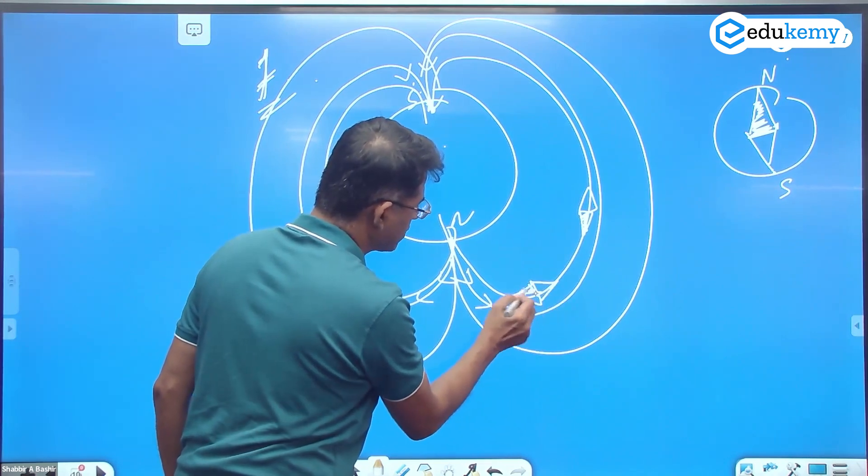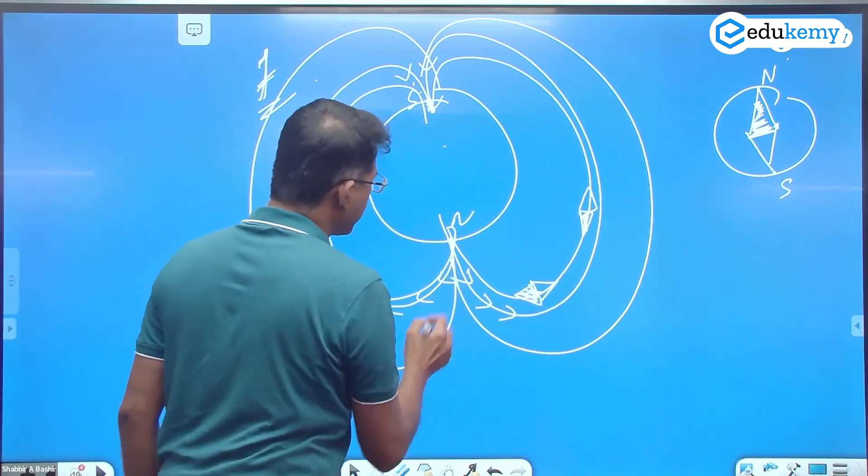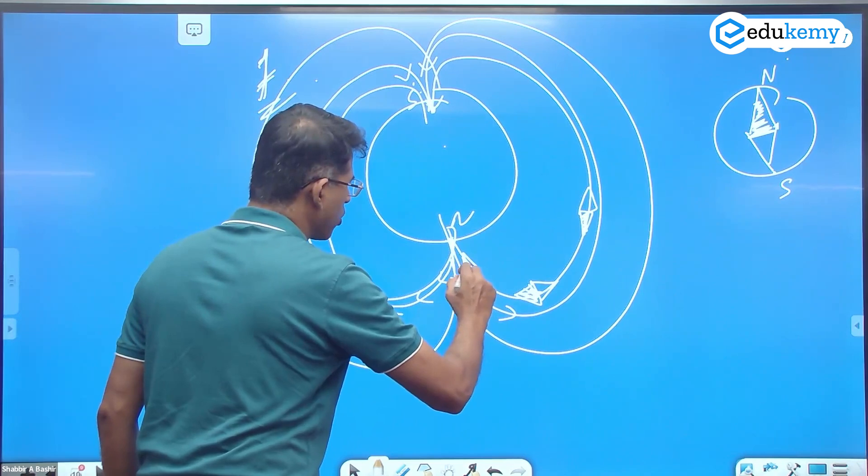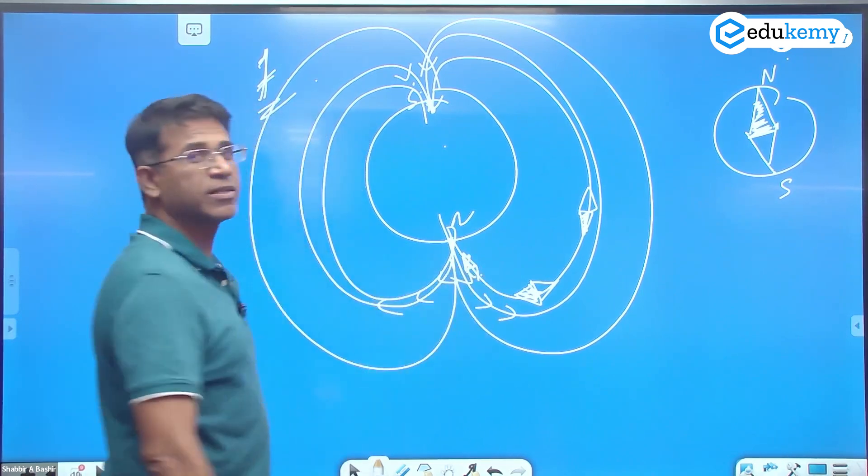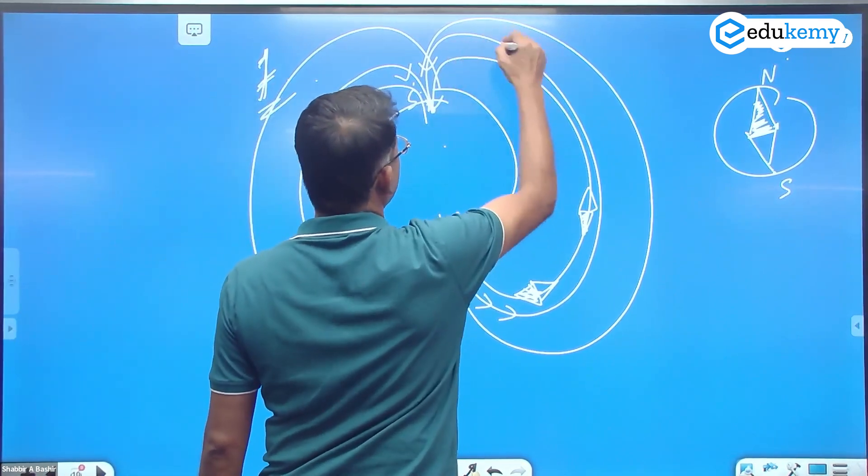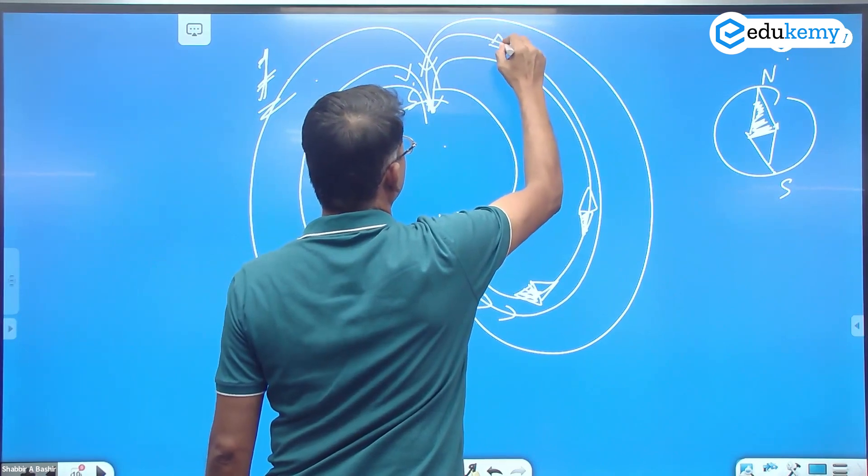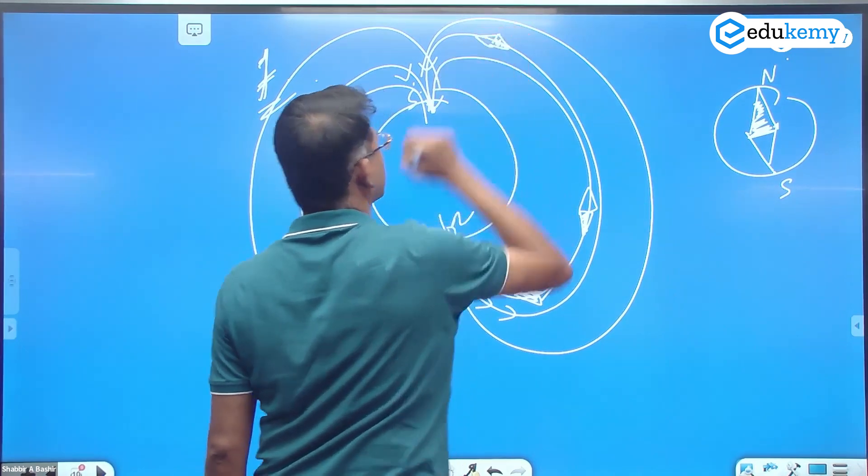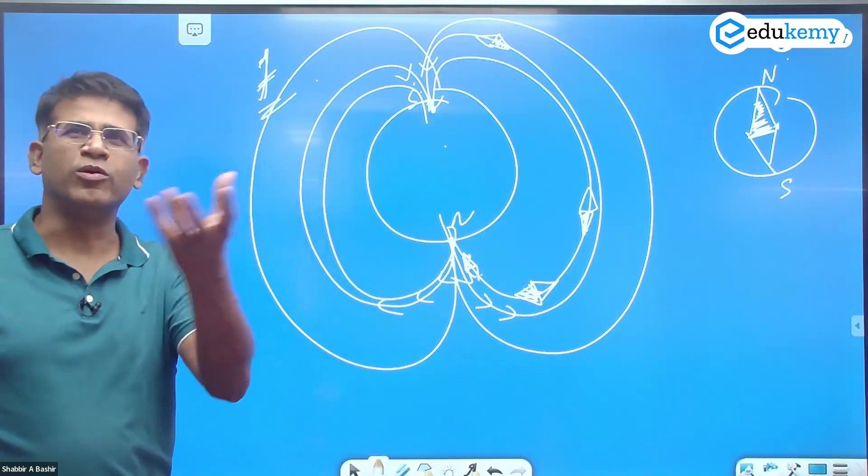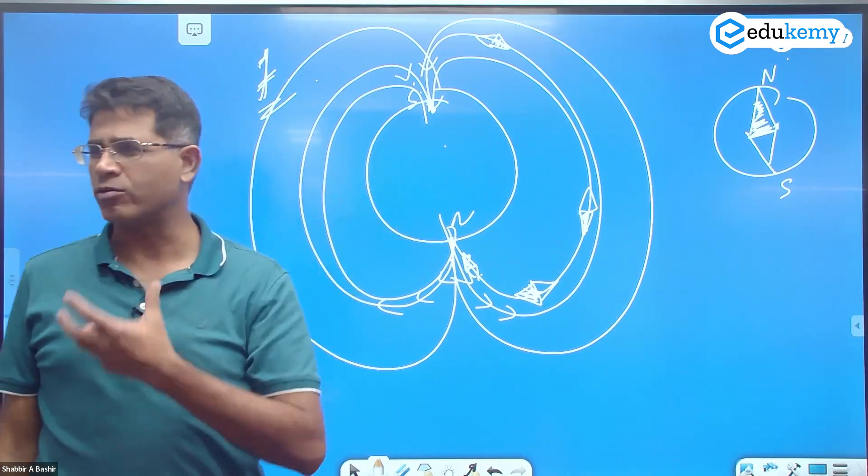Along the line, along the line, this is the north, this is south. You bring it here, it'll point north, it'll point south like this. You take it anywhere, take it here, it'll show north along this and south along this.